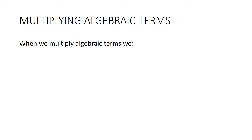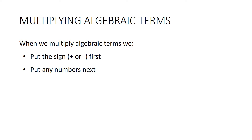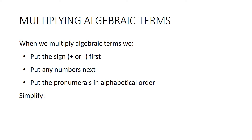When we multiply algebraic terms we put the sign — the positive or the negative sign — first, then any numbers next, and then the pronumerals in alphabetical order. So if we want to do minus 2 times a times 6, that would be written as negative 12a.